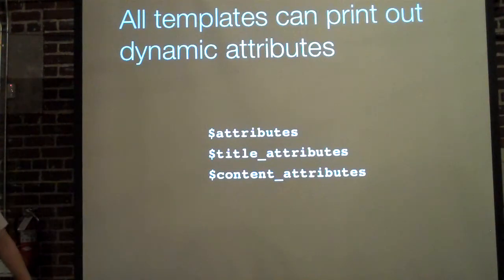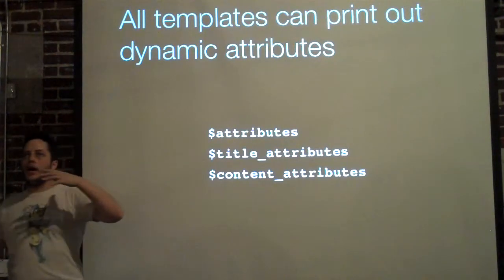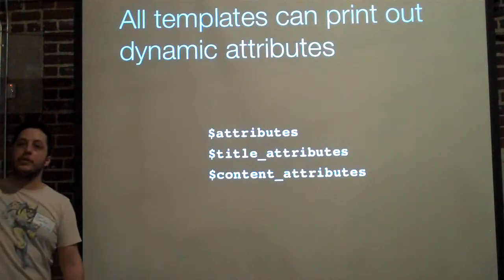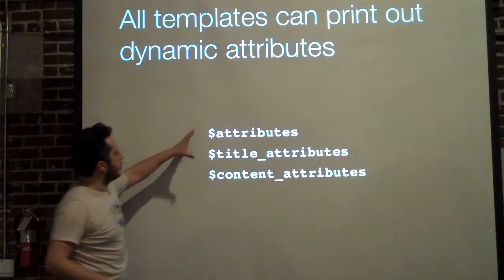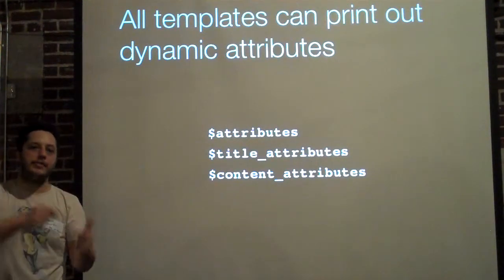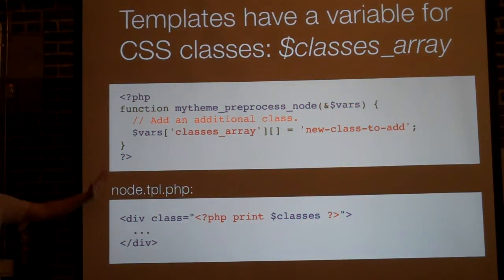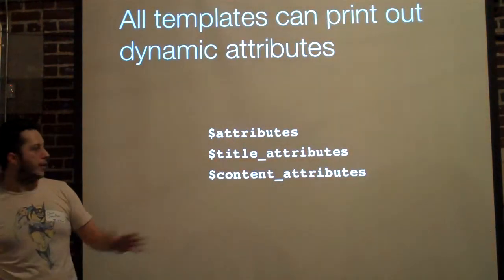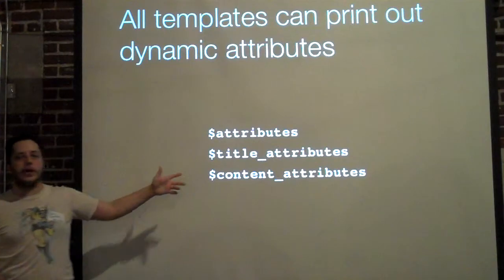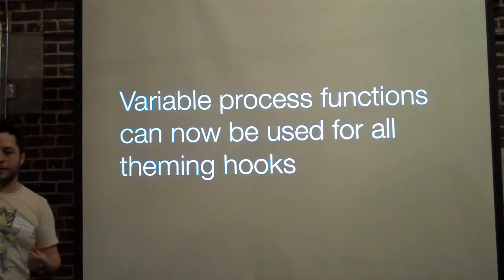All templates can now print out dynamic attributes. When you have an HTML tag like a div, you have the ID attribute, the class attribute, and anything else. Now through code we can collectively add different attributes. By default, templates have to have ID and class established — that's why you have the classes array — but any other attribute for a tag can be pushed through the attributes variable. And if it's specifically for the content or the title, they have their own attributes array.